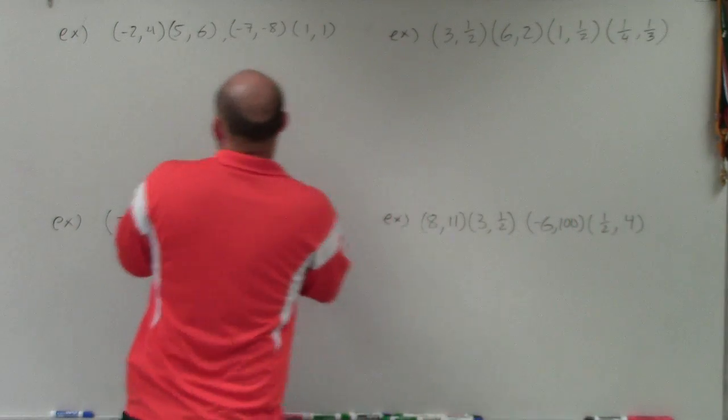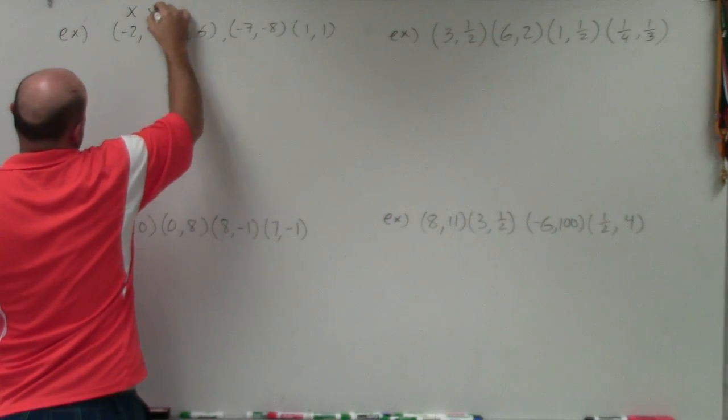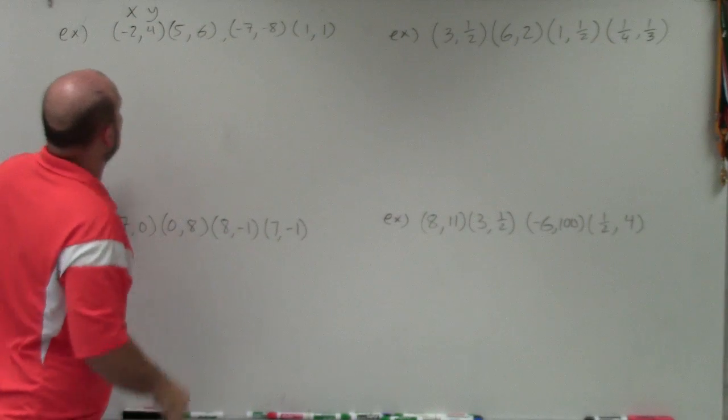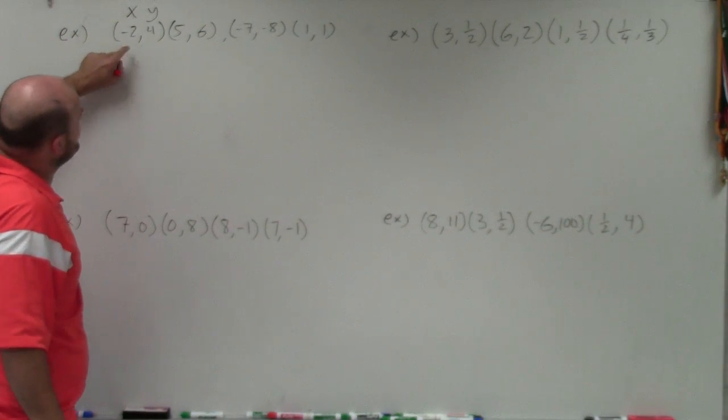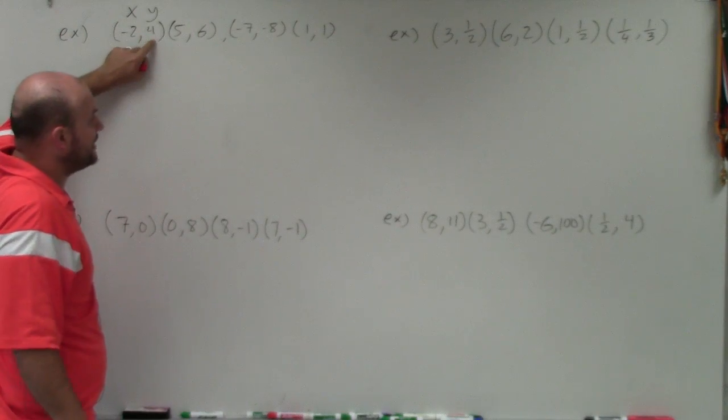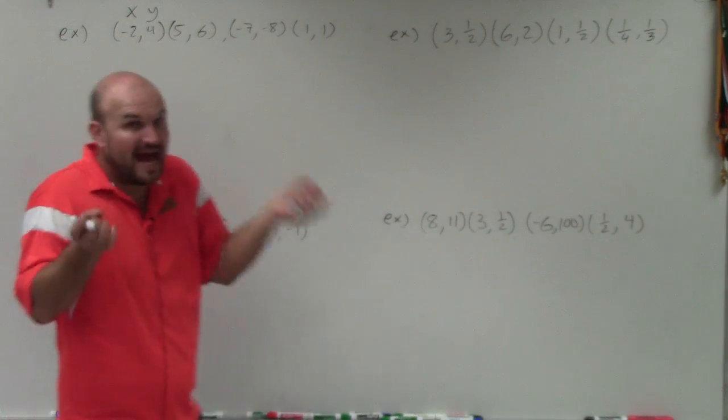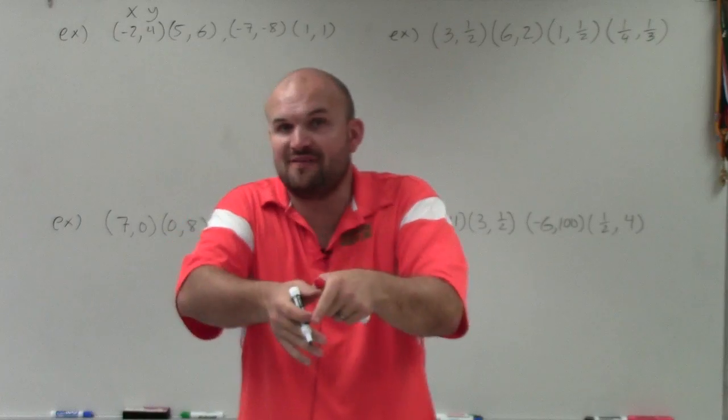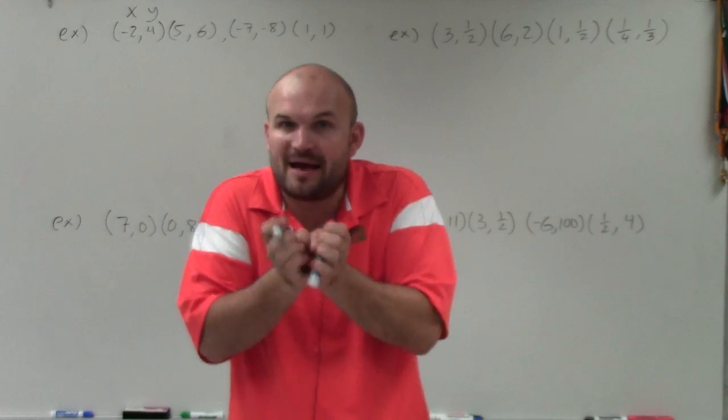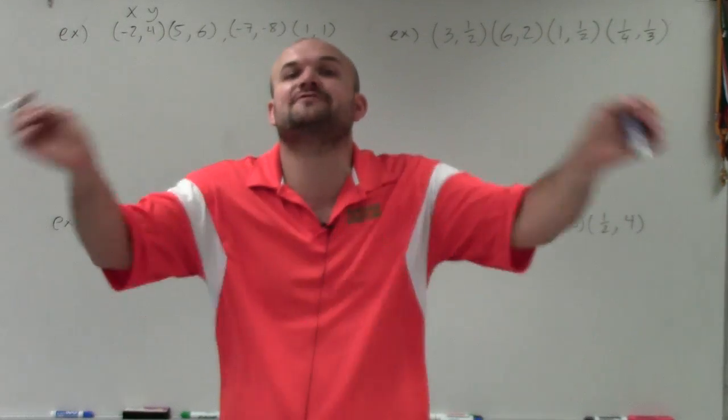So basically remember, when you're looking at coordinate points, you have an x and a y-coordinate, right? Each x-coordinate has to uniquely map to one y-value. Now, you can have different x-coordinates go to the same y-value. You just can't have the same x-value go to two different y-values.